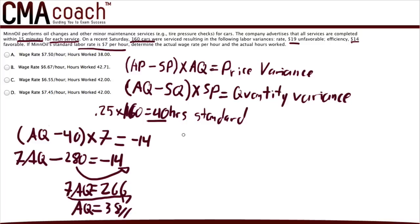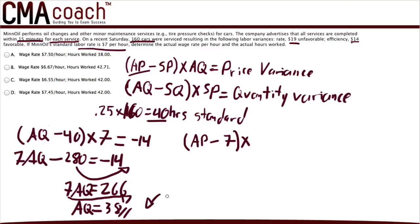Now that we have the actual quantity — 38 actual hours worked — we can use that in the price variance formula to solve for actual price. Looking at the formula: open parentheses, AP (actual price) minus standard price ($7), close parentheses, times actual quantity (38) equals $19, which is the unfavorable variance given in the question.